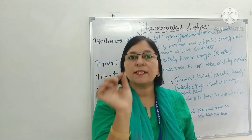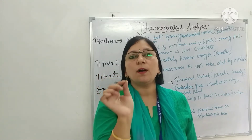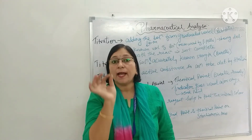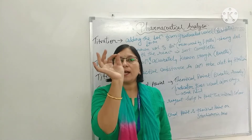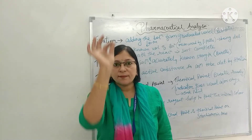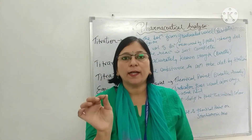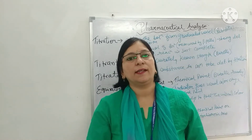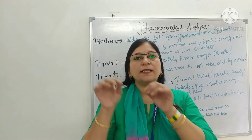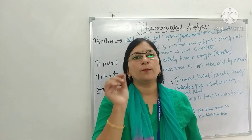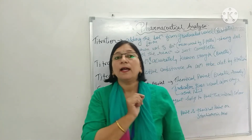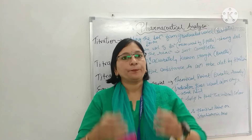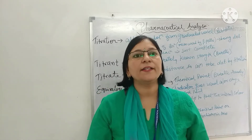Clear — तो ये जो 10 आना था, जो हमने theory से calculate किया था, वो 10 था। But आया 10.1। तो जो point 1 का difference है — 10.1 minus 10 — मतलब जो हमारा indicator की value से end point आया, उसमें से हम theoretical point को minus करेंगे: 10.1 minus 10 = 0.1 — यह हमारा error आएगा। तो यह हमारा equivalence point है, और यह end point आया।